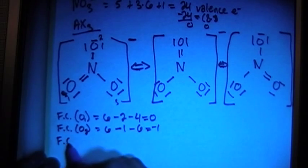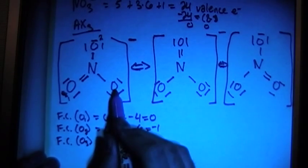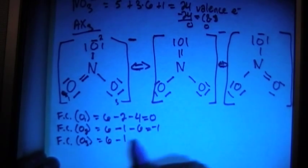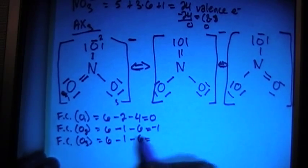The formal charge of oxygen three, which is the lower right one here, is going to be 6 valence brought in, minus 1 bond, minus 6 non-bonding electrons, just the same as oxygen two, which is also a negative one formal charge.